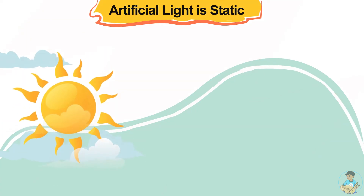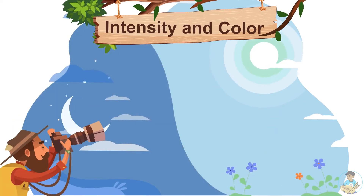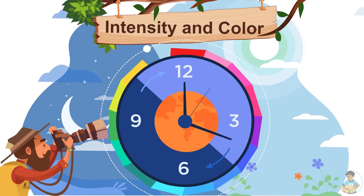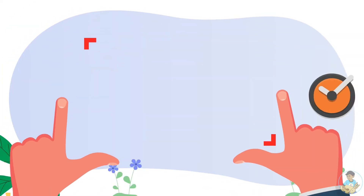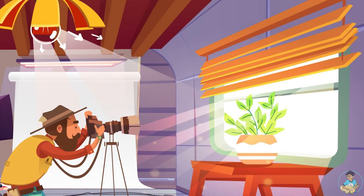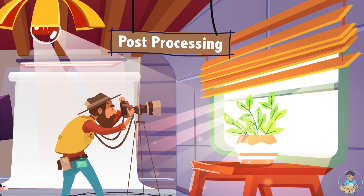Unlike natural light, artificial light cannot change on its own — it is static. It is available any time of day with the same intensity and color. This aids in planning your photo shoot irrespective of the time, weather, or location. With the correct artificial light settings and post-processing, we can even get the effect of shooting an image in natural light, without any time restrictions.